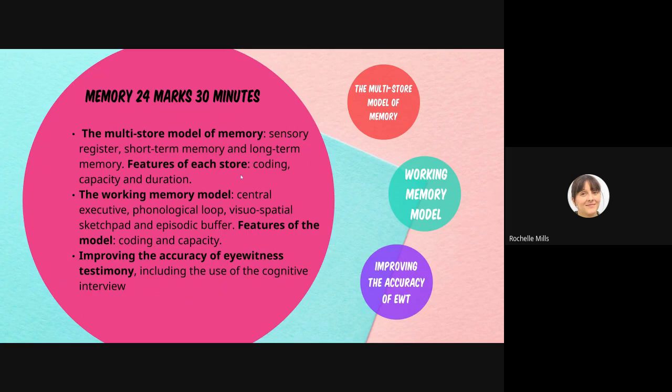We've looked at the multi-store model of memory in part one, and now we've looked at the working memory model. You need to be aware of the central executive, the phonological loop, the visuospatial sketchpad, and the episodic buffer, and the features of the model — specifically the coding and capacity of the phonological loop and the visuospatial sketchpad. Have a look at the exam questions and mark schemes, and look at some past papers to see variations of questions. Try planning some 16-mark answers for the multi-store model and working memory model. In the next part, we'll look at improving the accuracy of eyewitness testimony and focus on the role of the cognitive interview.